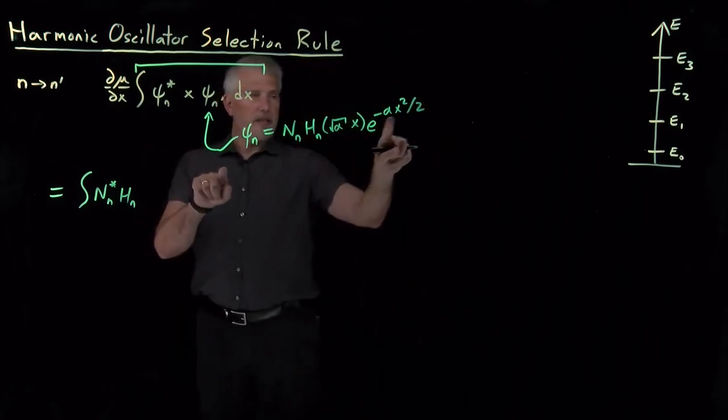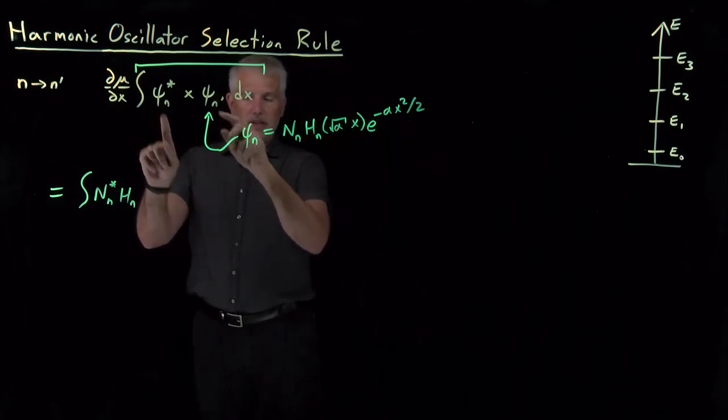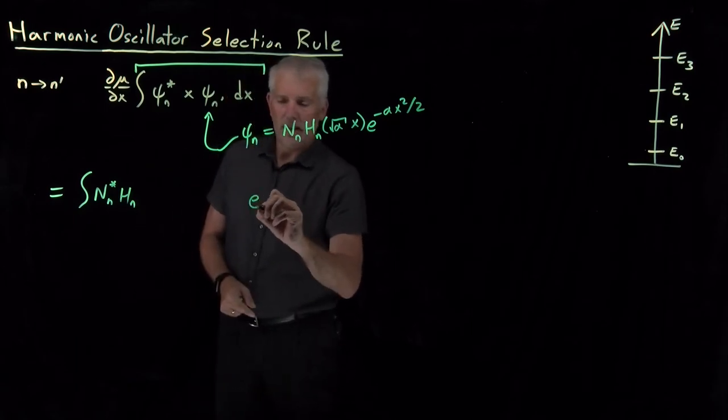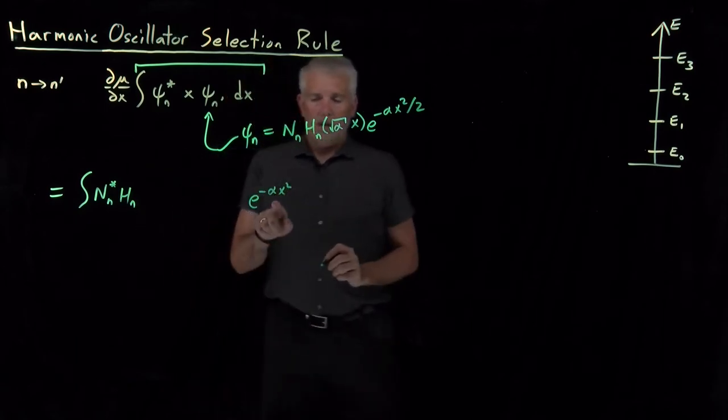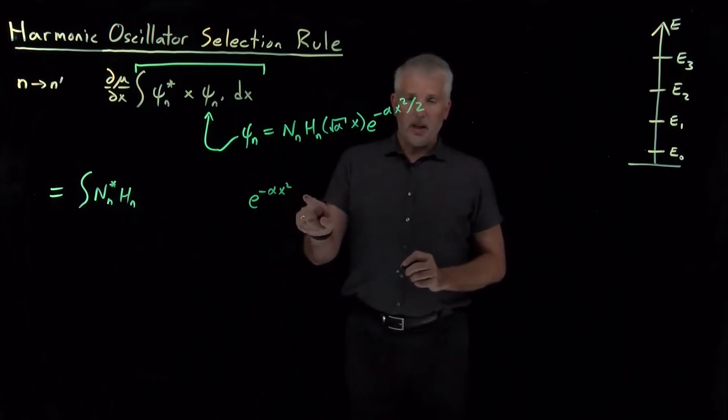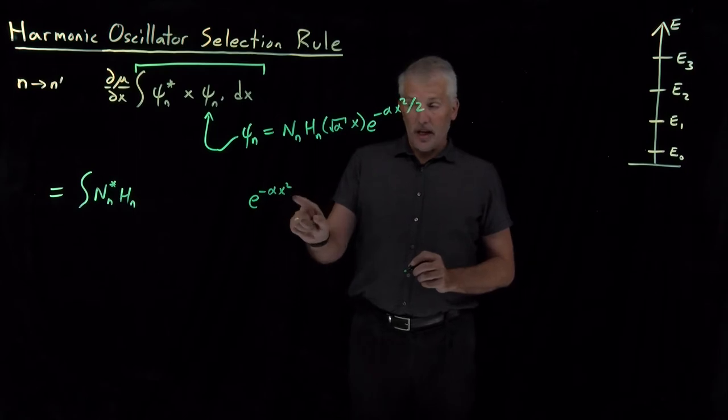When I combine the e to the minus alpha x squared over 2s for both of these pieces, I'll go ahead and do that ahead of time. That's going to look like e to the minus alpha x squared over 2 and another one. When I combine those together, I just get e to the minus alpha x squared not divided by 2.